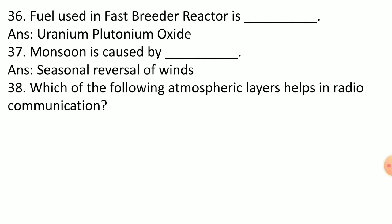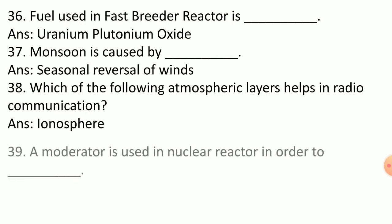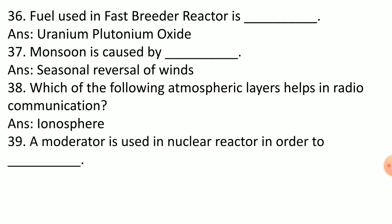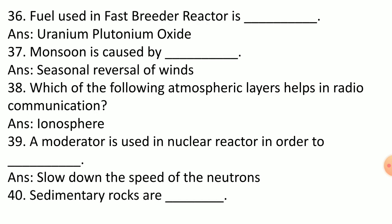Which of the following atmospheric layers helps in radio communication? Ionosphere. A moderator is used in nuclear reactor in order to slow down the speed of neutrons, to convert the fast-moving neutrons to slow-moving neutrons. The material is called moderators and it helps improve the efficiency of the fission reaction. Sedimentary rocks are porous.